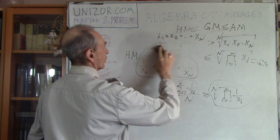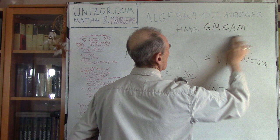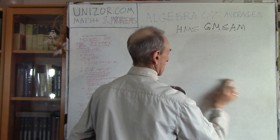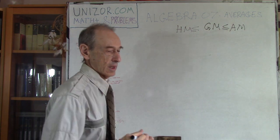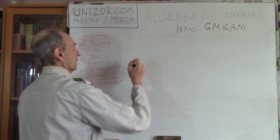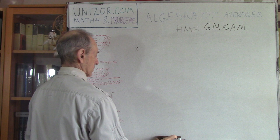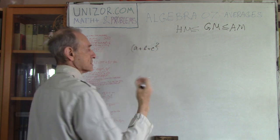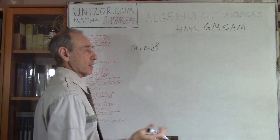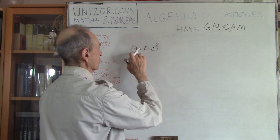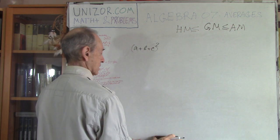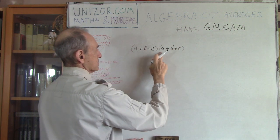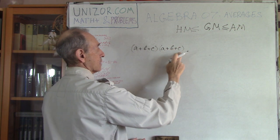The next average we will talk about is quadratic average, which will be greater than arithmetic. Before proving it, let me introduce a couple of formulas. Consider (a + b + c)², which equals (a + b + c)(a + b + c). Opening all the parentheses, you get certain squares — a², b², c² — plus cross-product terms.